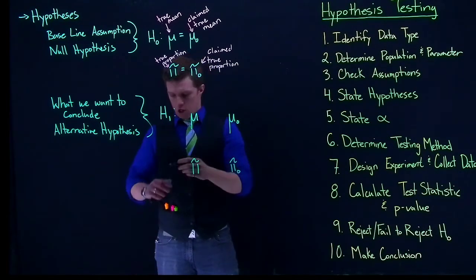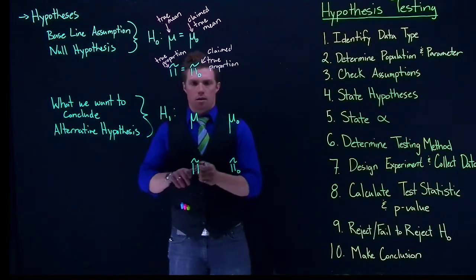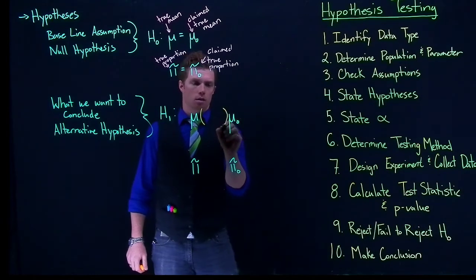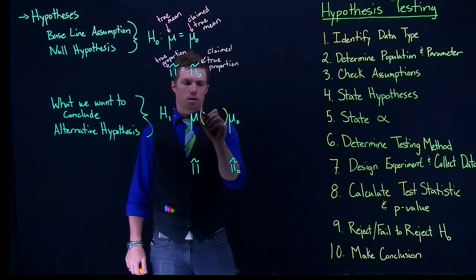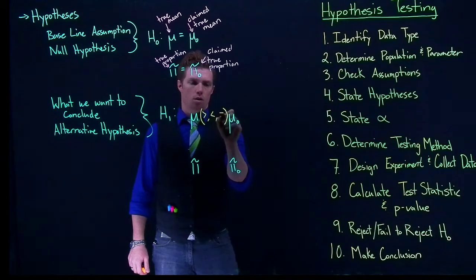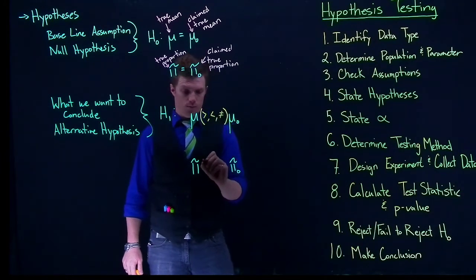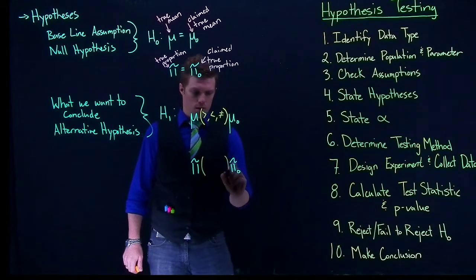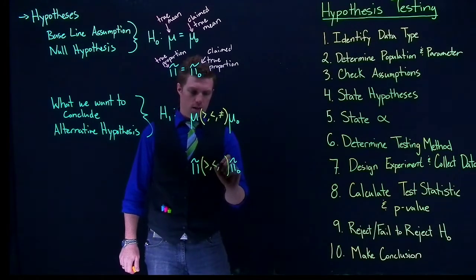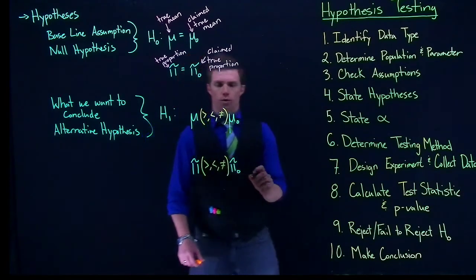And what goes in here can be one of three things. So it can either be greater than, less than, or not equal to. And down here as well, we can have greater than, less than, or not equal to.